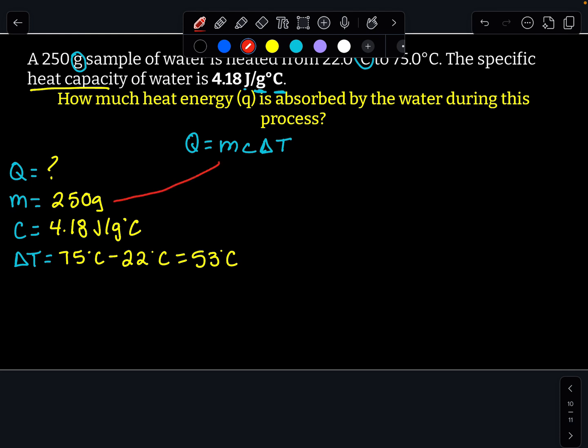So m is going to be 250. So this is q equals 250, times C, which is 4.18, times delta t, which is 53. All right, plugging that all into the calculator, we get a q value of 250 times 4.18, times 53.